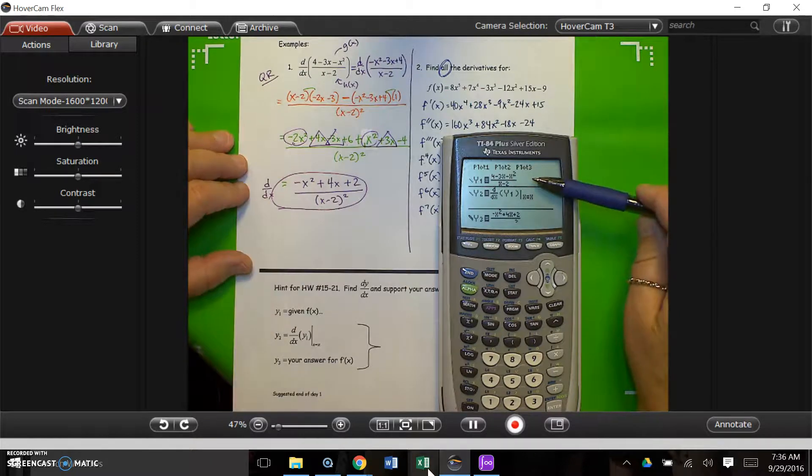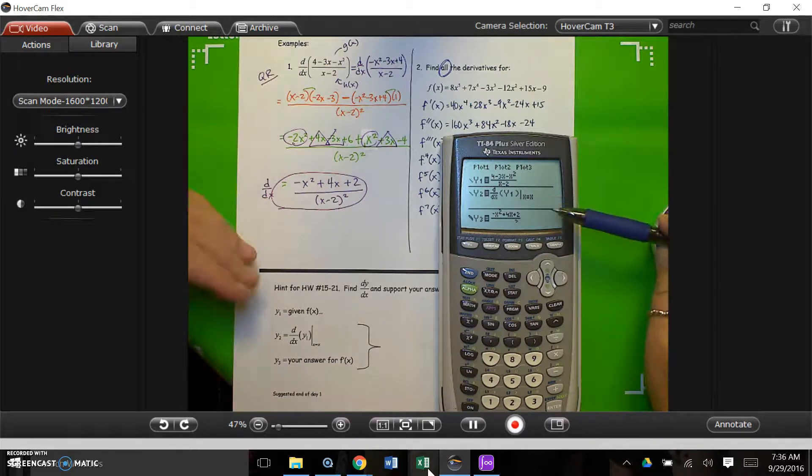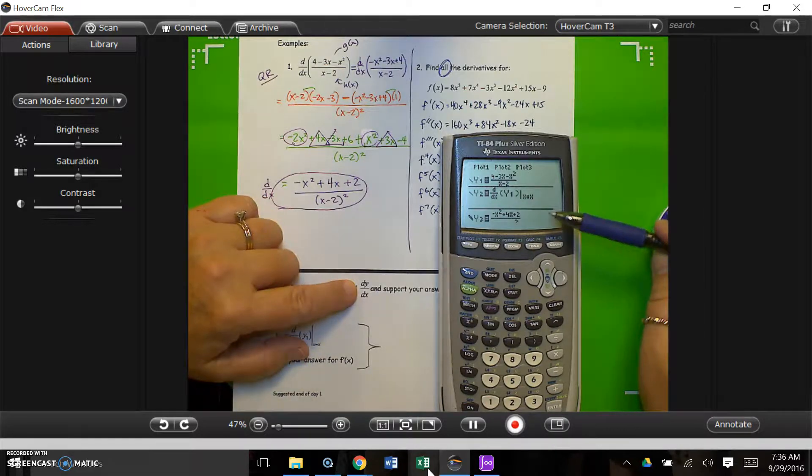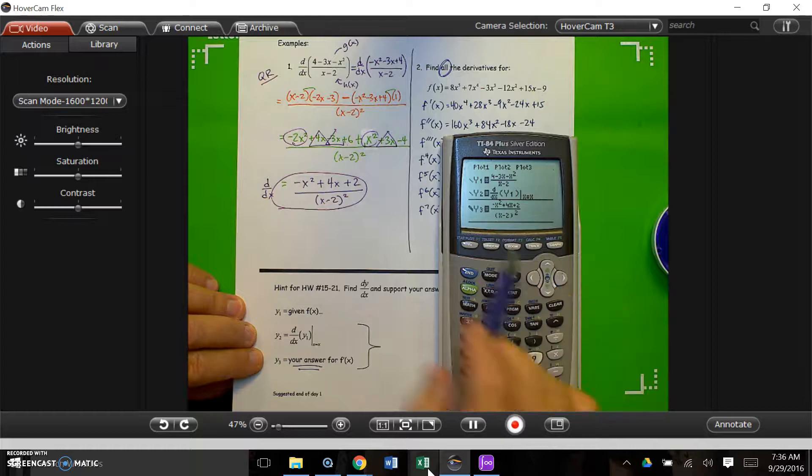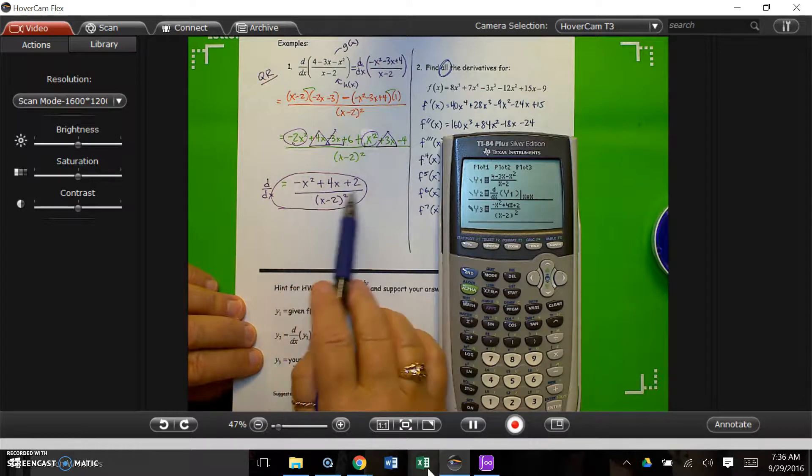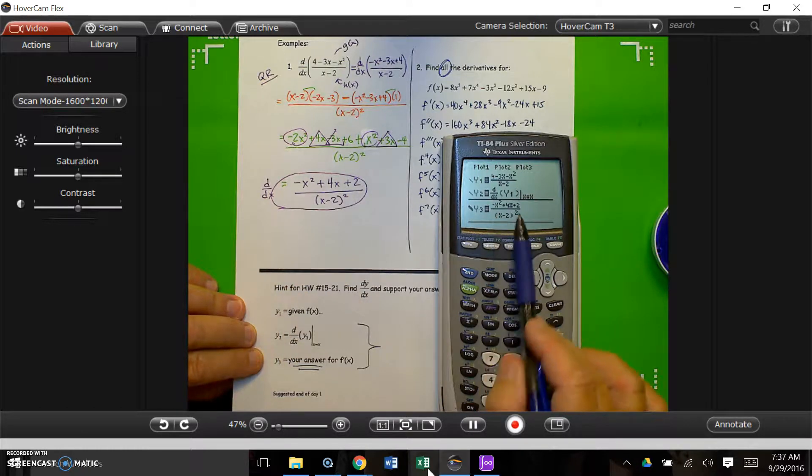Then, so this would, that's all you had, this would graph the function and its derivative. But as a third step to check your answer, you're going to put your calculated answer for f prime into the third function. And if you notice, that's what I've done here. There's our answer that we came up with